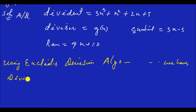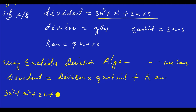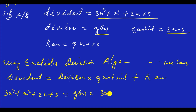I'm making coverage on a tablet. Dividend equals divisor into quotient plus remainder. So we have: 3x³ + x² + 2x + 5 equals divisor times quotient plus remainder.